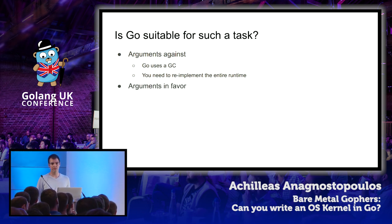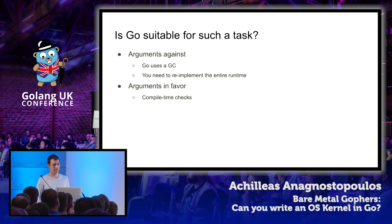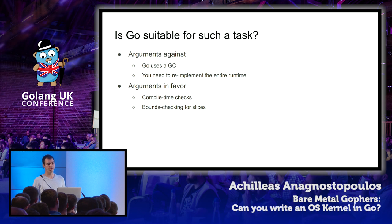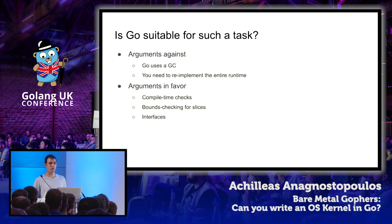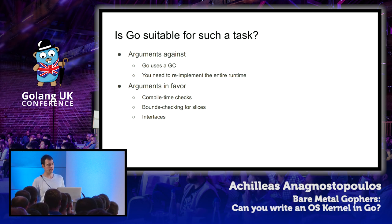Why would we actually use Go for this task? The Go compiler goes to great lengths to prevent us from accidentally shooting ourselves in the foot, as we could easily do in C. We also get bounds checking for our slices for free, which can help mitigate buffer overflow bugs. Finally, we get to use interfaces, which are a very powerful tool when building device drivers for different hardware types. Interfaces also allow design patterns that make code easier to test — and if you're writing something as complicated as an OS kernel, you need solid testing.